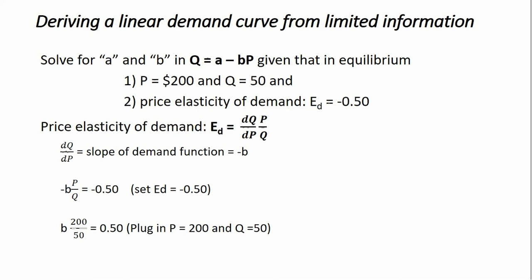Hello. In this video, we are going to derive or estimate a linear demand curve from a limited set of information. In general, a linear demand curve is given by Q equals A, some constant here, minus B times P. P is the price and Q is the quantity demanded. What we want to do in this problem is figure out what A is and what B is.